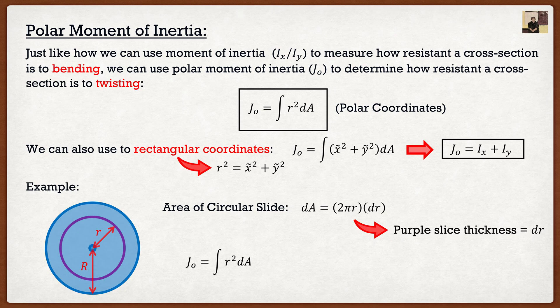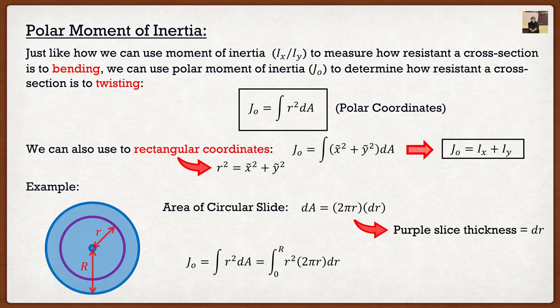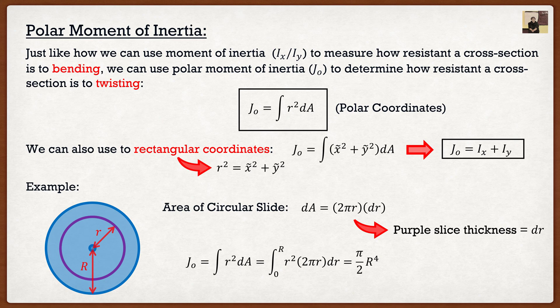From there, we can substitute everything into our formula here. And we know that we have the integral from zero to r, the radius of r squared times two pi r with respect to dr. And then we get pi over four r to the four. This is how you can find the polar moments of inertia.